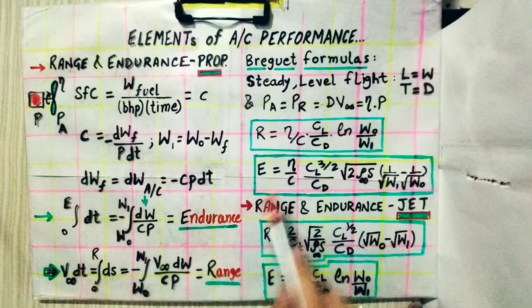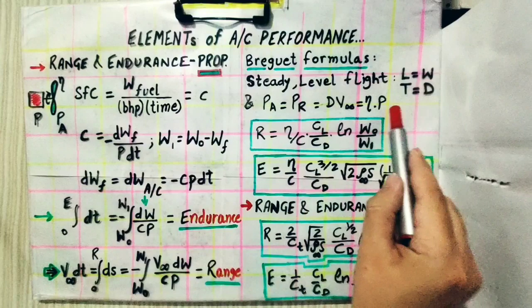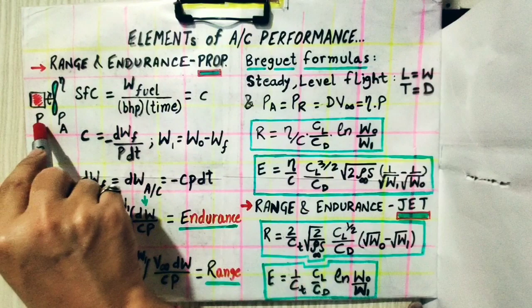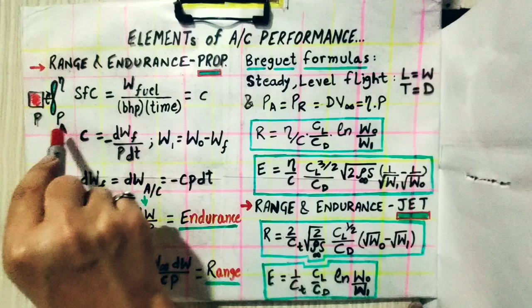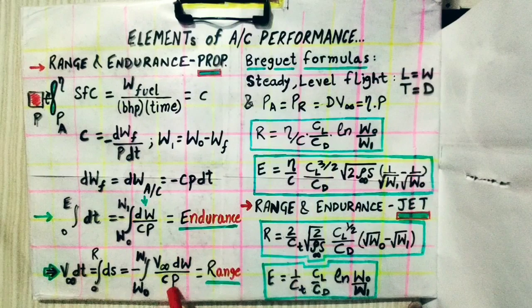For a piston-engine propeller aircraft, the range and endurance depend upon the brake horsepower P produced by the engine — not the power available at the propeller end. This is why we use P (brake horsepower) in the formula, not η·P (power available). Upon solving, we obtain the final expressions.